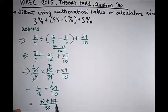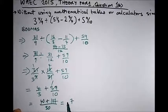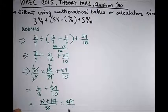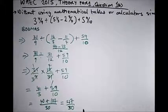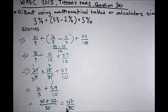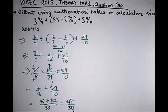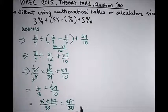Adding 40 and 177: 7 plus 0 is 7, 4 plus 7 is 11 — carry 1 — giving 217. So we have 217 over 30. For theory questions it's proper to convert to a mixed fraction: 30 goes into 217 about seven times — 7 times 30 is 210 — remainder 7. So the answer is 7 and 7 over 30.